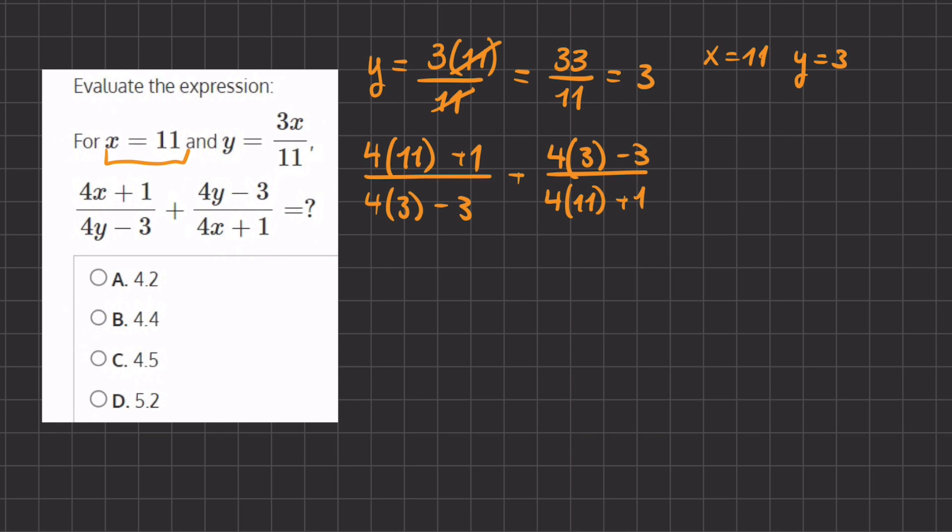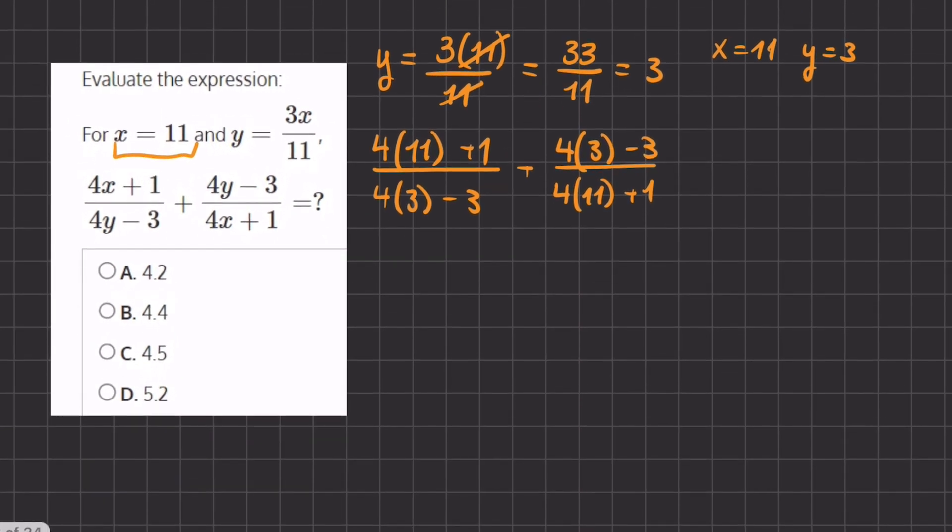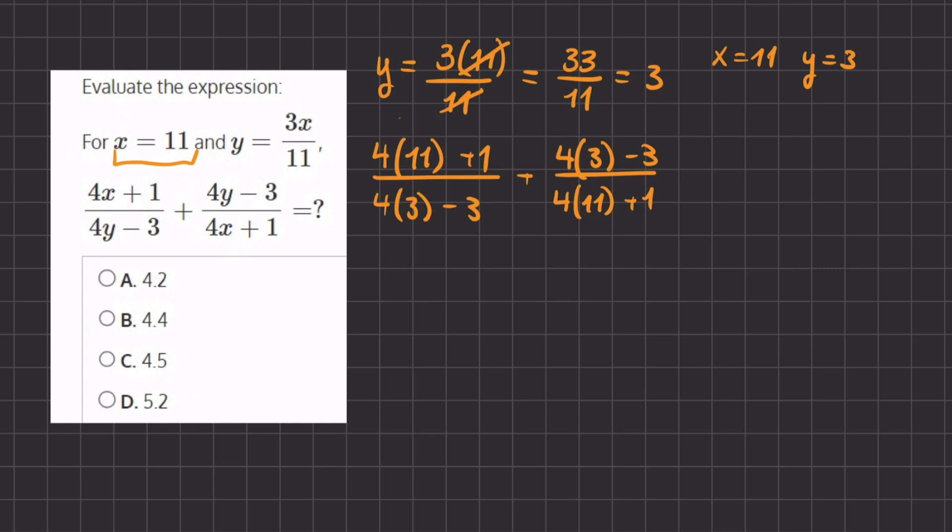Now let's start simplifying. We have 4 times 11, which is 44, plus 1. So that gives us 45, divided by 4 times 3, which is 12, minus 3, gives us 9.